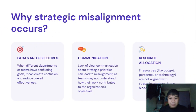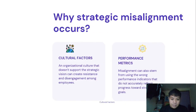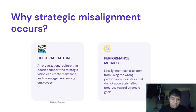Why does strategic misalignment occur? These are the key examples: it includes goals and objectives, communication, and resource allocation. It also includes cultural factors and performance metrics.